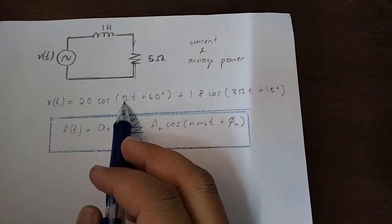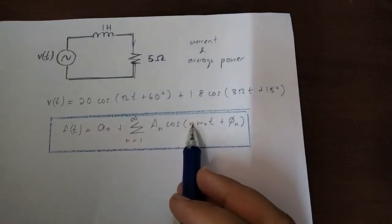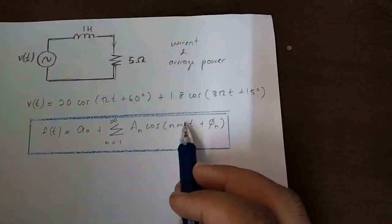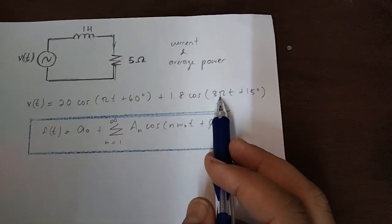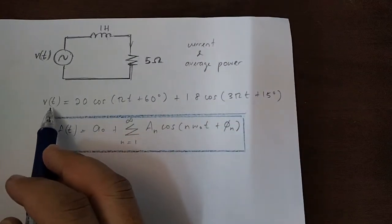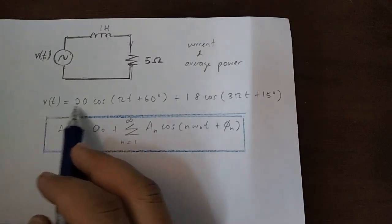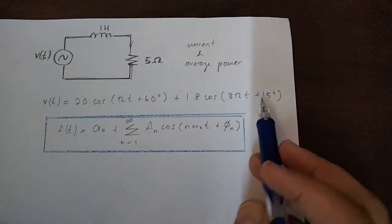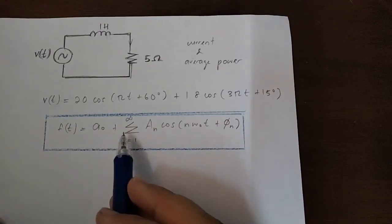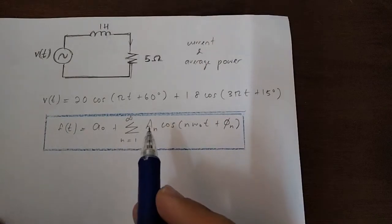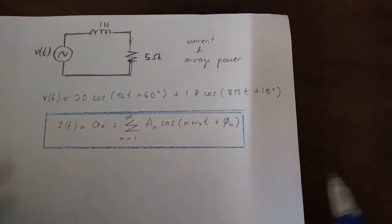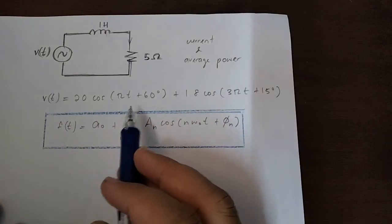We can see that the first term is for n equals 1, where ω₀ is π. The second term is for n equals 3, and ω₀ is also π. For this example, the voltage supply is only up to n equals 3 to simplify the solution — we will not solve for n equals 5, 7, and so on. For the sake of understanding and explanation, we will only consider n equals 1 and 3.